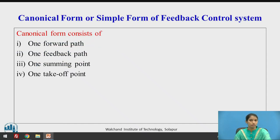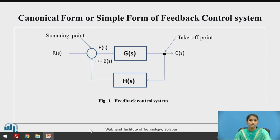A canonical form consists of one forward path, one feedback path, one summing point, and one takeoff point. In the last video, we studied how to reduce this canonical form into a simple transfer function, that is C(S) / R(S). It has one forward block, one reverse block, a summing point, and a takeoff point — input signal, output signal, error signal E(S), and feedback signal B(S).